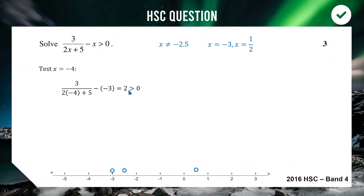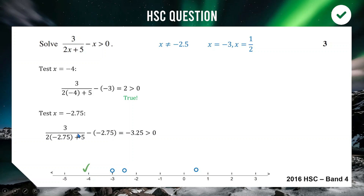Testing x = −2.75 (between −3 and −2.5): substituting gives approximately −3.25, which is not bigger than 0 — false. So this region is excluded from our solution.